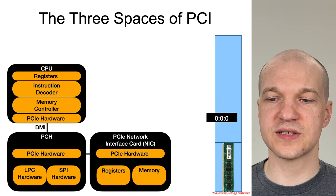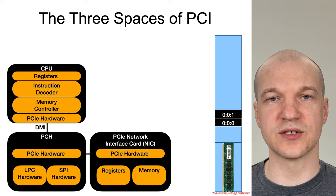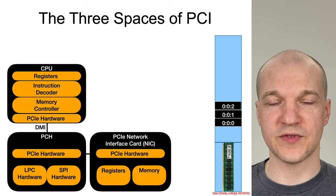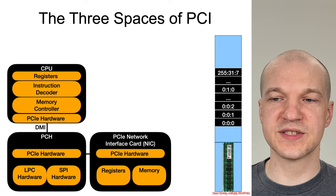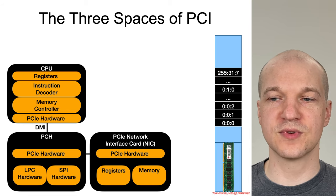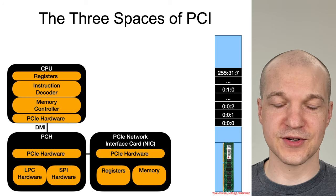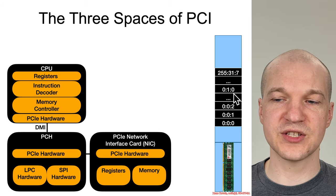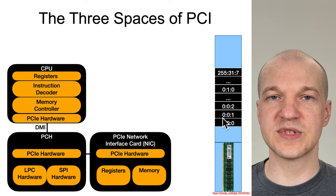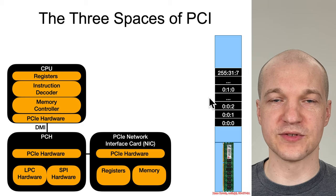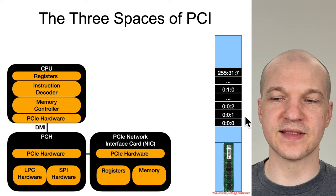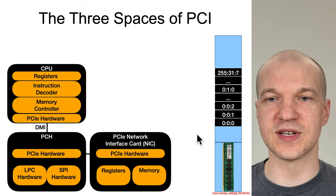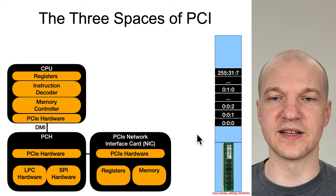So that's bus 0, device 0, function 0 — then bus 0, device 0, function 1, function 2, and so on. Then device 1, function 0, all the way up through bus 255, device 31, and function 7. Potentially all of these can be mapped into memory-mapped IO space or port IO space, although they don't necessarily all have to be, if the system designers want to make sure they don't steal too much of the physical address space. We'll see a little about the configurability of that later.